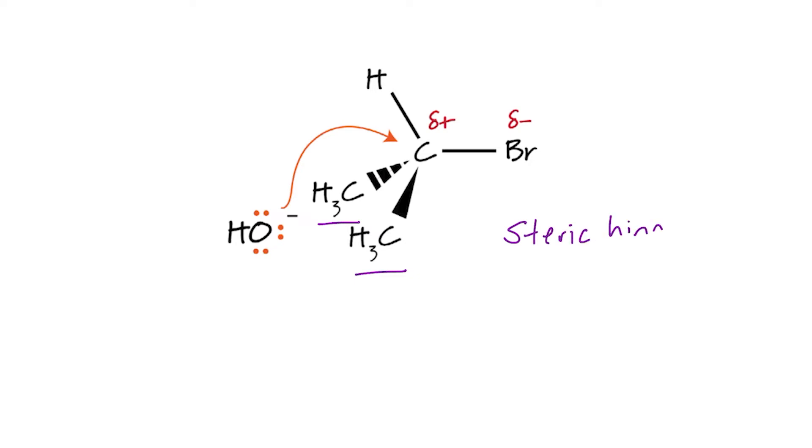So we have, in posh language, steric hindrance. What does that mean? Well, physically they just get in the way of our nucleophile being able to get to that delta-positive carbon atom in double-quick time. So secondary haloalkanes tend to react slower than primary.